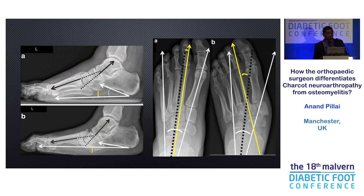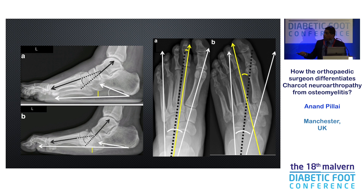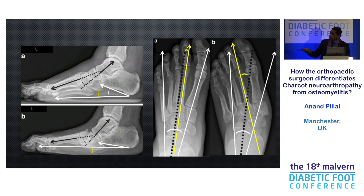Some examples of radiological landmarks to look for: Meary's line — normally a straight line from the talus all the way down to the metatarsal. If you get a midfoot break, you can see that line is disrupted. The calcaneal pitch shows the angle the calcaneum sits in — if that breaks, it reduces. Similarly, the cuboid height reduces as the midfoot breaks. And as the foot drops, the alignment between the forefoot and the hindfoot, which should be straight, deviates to one side.